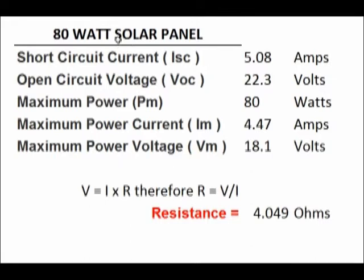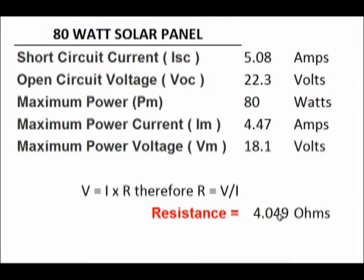Going back to the specifications for this 80-watt panel — we already talked about short circuit current, open circuit voltage, and the maximum power point. Since we know the voltages and currents, we can calculate the equivalent resistance of this panel. Rearranging Ohm's law, resistance equals voltage divided by current. Taking 18.1 divided by 4.47, we come out with an equivalent resistance of a little over 4 ohms — that's the resistance through all the cells and all the wires of this particular panel.